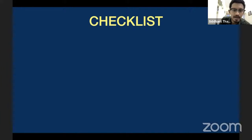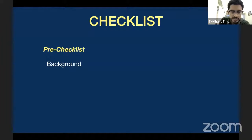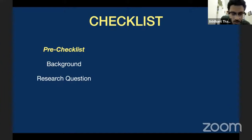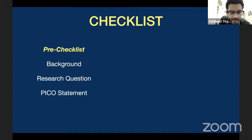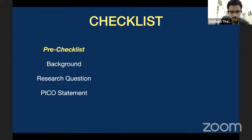What constitutes a checklist? You need to find out the background of the study — why it is being done and for what purpose, whether there is an actual rationale. You also need to look at the research question. The third thing is something called a PICO statement. PICO means: P for patient, I for intervention, C for control, and O for outcome. Once you have your randomized control trial, it will be easy to sort out the evidence based on this PICO statement — what patients were recruited, what is the intervention, what is the control arm, and what are the outcomes measured.